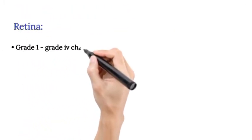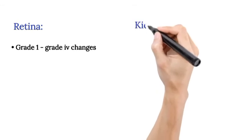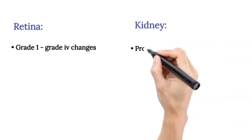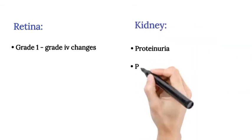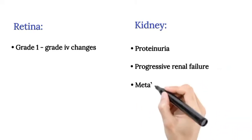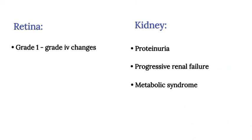Grade 1 to grade 4 retinal changes. Kidney: Proteinuria, progressive renal failure. Metabolic syndrome.